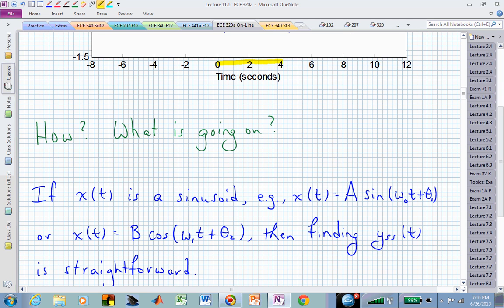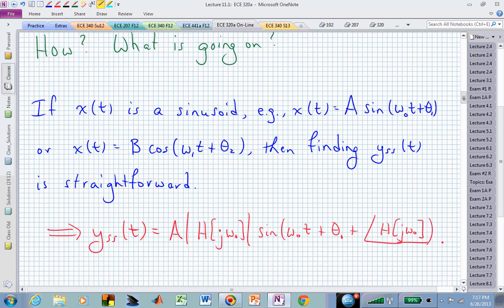Then we know, rather quickly, how to find the sinusoidal steady-state output from a sine wave or a cosine wave. We know that the output is going to be at the same frequency. We know the amplitude will be scaled by the value of the transfer function, or the magnitude of the transfer function, at the frequency of excitation. In this case, for the sine wave, that frequency is omega-naught.